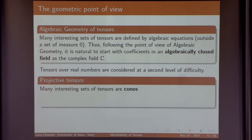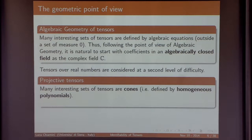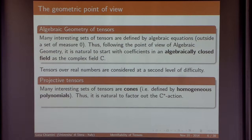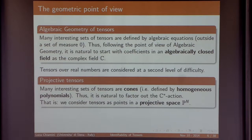Many interesting sets of tensors, such as simple tensors, are cones — meaning they are defined by homogeneous polynomials. So it is natural to factor out the C-star action. This is one big difference between people from geometry and people from statistics: in statistics you normalize everything so that all probabilities sum to one, whereas in geometry we do not care about scaling a tensor. We factor out the C-star action and consider tensors as points in projective space.